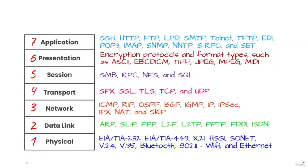The third layer of the OSI model is the network layer. The network layer is responsible for receiving frames from the data link layer and delivering them to their intended destinations based on the addresses contained inside the frame. The network layer finds the destination by using logical addresses such as IP addresses. At this layer, routers are crucial components used to route information between networks.